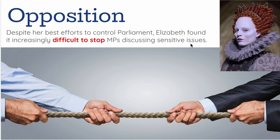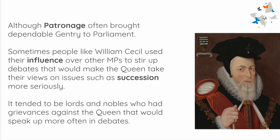MPs are Members of Parliament, and these sensitive issues that she wanted them not to talk about were things like succession. Although patronage often brought dependable gentry to Parliament — gentry that she trusted — sometimes people like William Cecil used their influence over other MPs to stir up debates that would make the Queen take their views on issues such as succession more seriously. It tended to be lords and nobles who had grievances against the Queen that would speak up more often in debate.